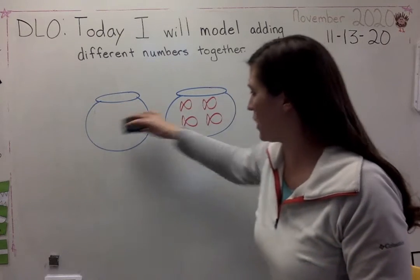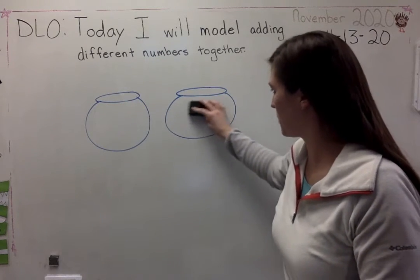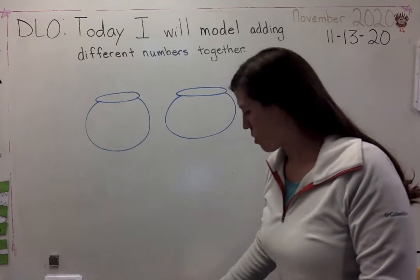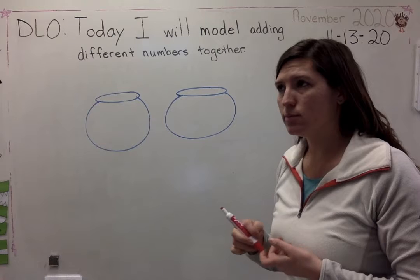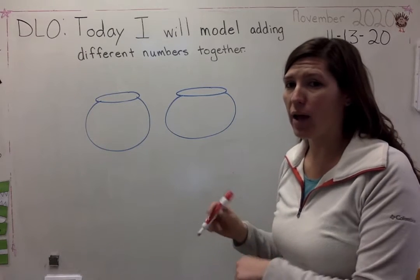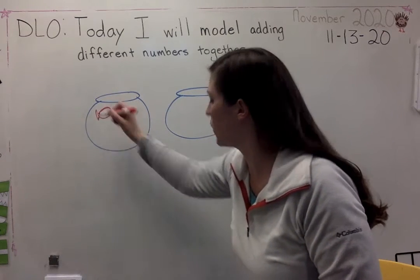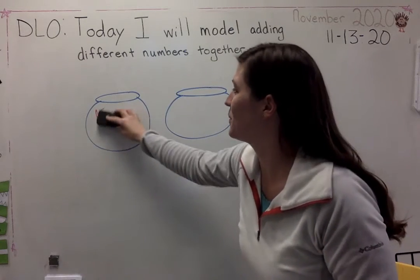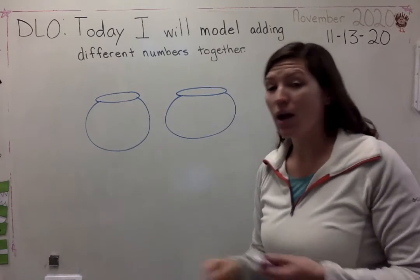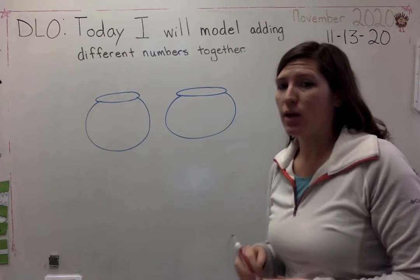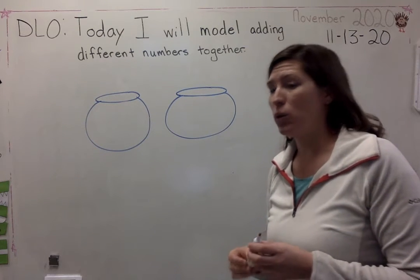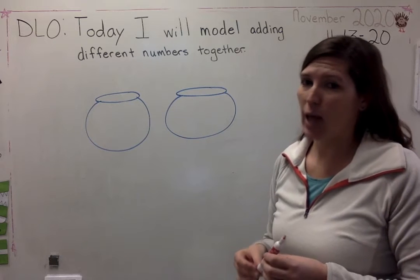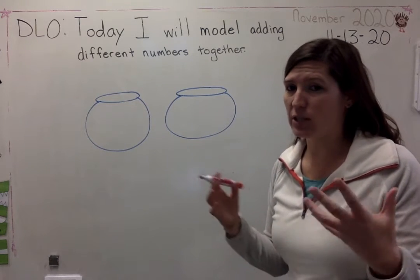We'll do fish again because I can draw fish easily. I have four fish. Oh wait, I'll say the story first. We'll talk about how to model it. I have four fish in a bowl. My sister came home with another fish bowl with four more fish. How many fish do we have all together?